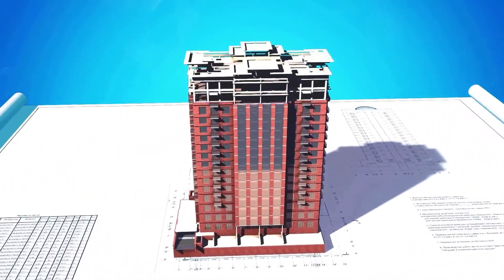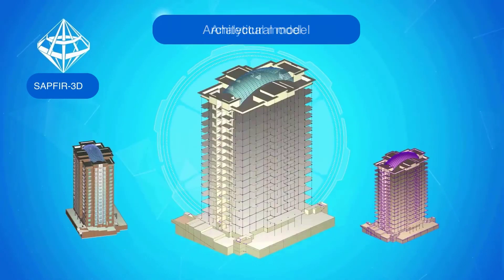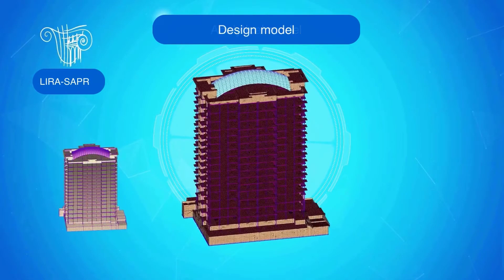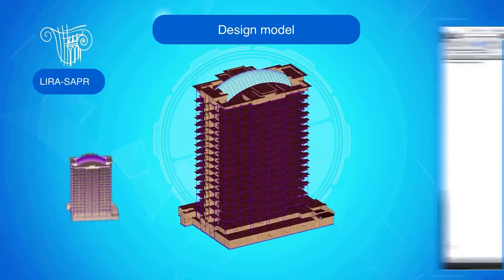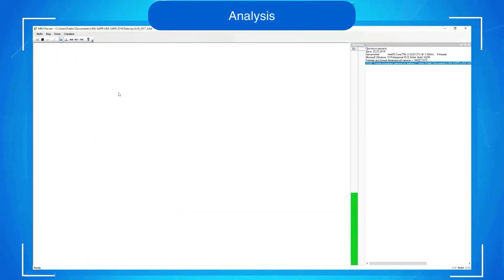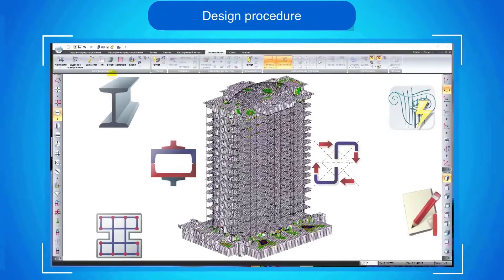The model is generated in the SAPHIR module or imported from other programs. Then, in automatic mode, an analytical model is formed, and after that, the design model, which is transferred to the finite element analysis. According to analysis results, it is possible to design steel and reinforced concrete elements and generate explanatory notes.